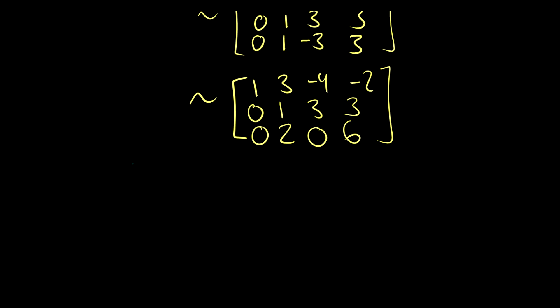So we have that 2x2 is equal to 6, which means that x2 is equal to 3. We have from this, we have x2 plus 3x3 is equal to 3. So this means that 3x3 is going to equal 0. So x3 is equal to 0.